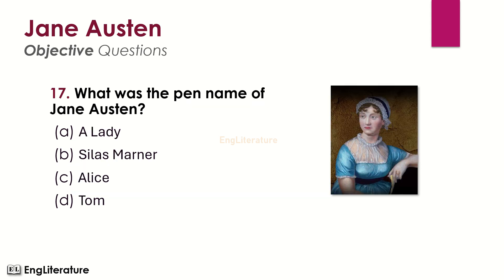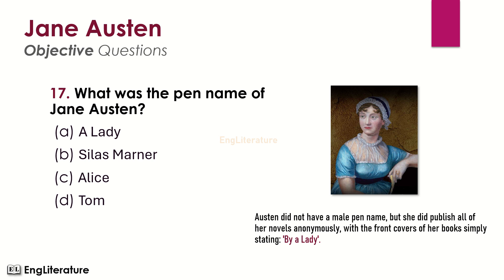What was the pen name of Jane Austen? Austen did not have a male pen name, but she did publish all her novels anonymously, with the front covers of her books simply stating 'by a lady.' The right choice is number A — the pen name of Jane Austen was 'a lady.'